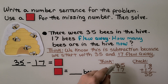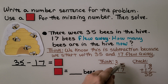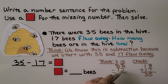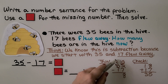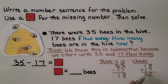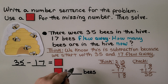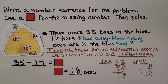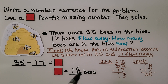We regroup from the tens place. This 3 tens becomes 2 tens, and the 5 ones becomes 15 ones. 15 minus 7 is 8. 2 tens minus 1 ten is 1 ten. That means it's 18. We check our math by adding the difference and the subtrahend together — if they equal 35, the minuend, we know we did it correctly. There are 18 bees in the hive now. The box represents 18.